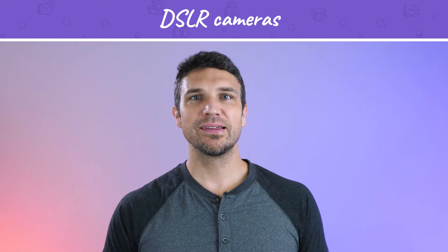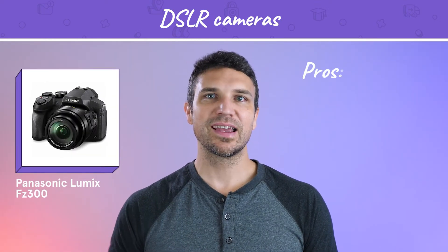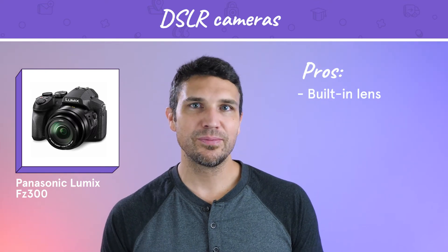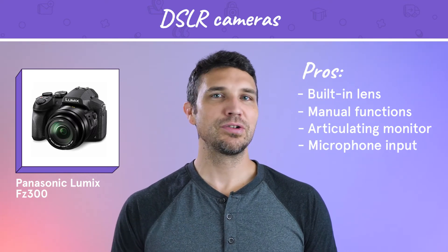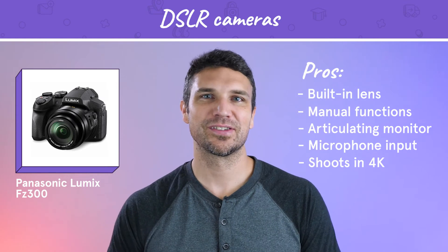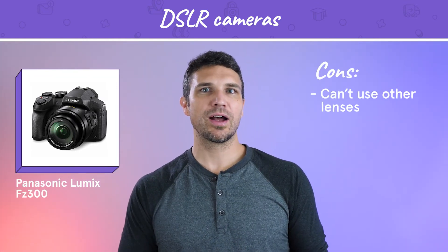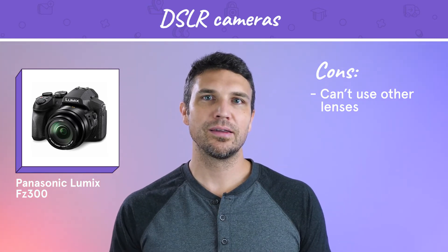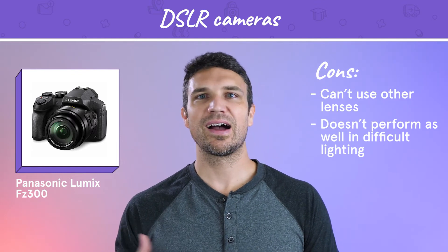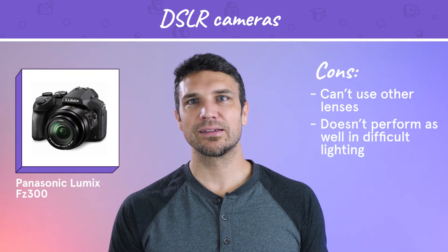Now on to video equipment. Using your phone to capture video is absolutely a viable option, but if you're wanting to improve your quality, it might be time to start shifting to DSLR. For this section, we're going to focus exclusively on DSLR cameras. On the lower end is the Panasonic Lumix FZ300. This camera comes equipped with a built-in lens, a ton of manual video functions, an articulating touchscreen monitor, microphone input, and it shoots in 4K, all for less than $400. While the built-in lens is versatile, you can't change it out with different lenses, which limits the types of shots you're able to produce. Also, while the quality is good, this camera just isn't going to perform as well as higher-end DSLRs in situations where the lighting isn't perfect.